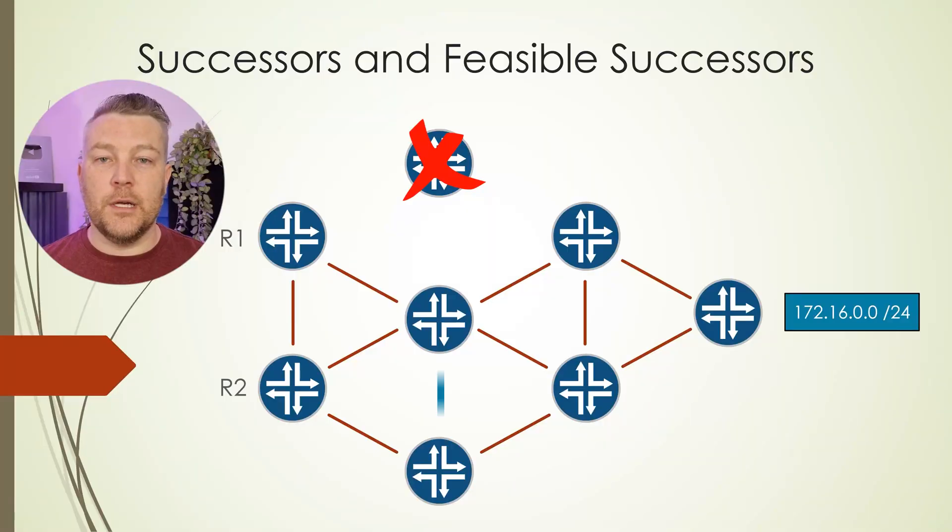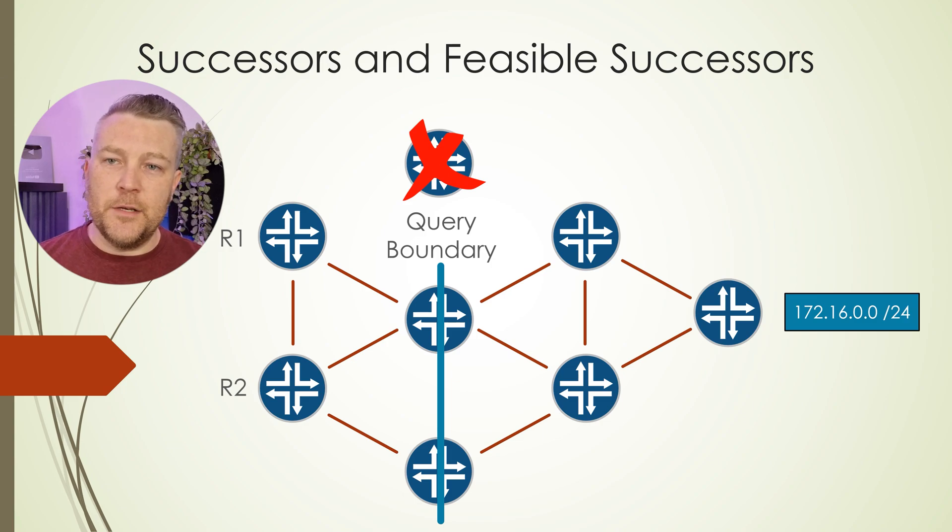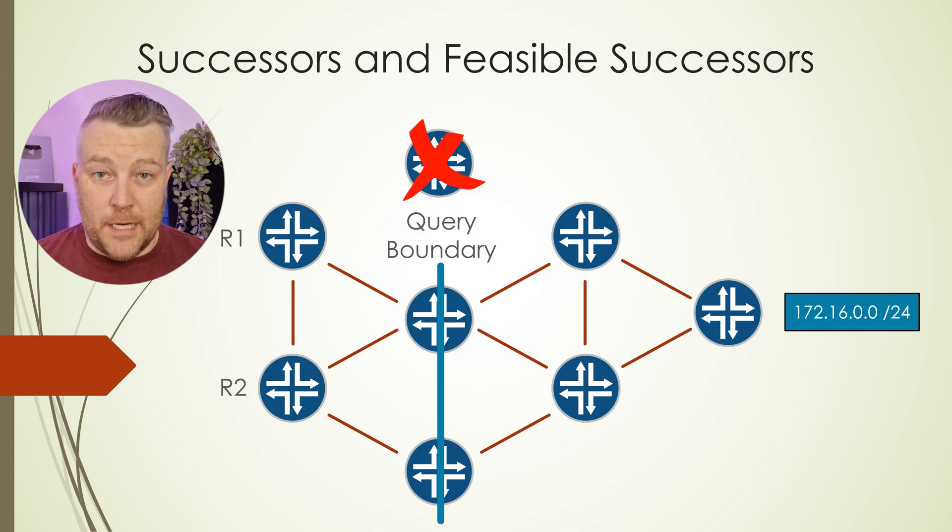These query messages will propagate through the network until they reach a query boundary — something that will stop the query. This can be one of several cases: a router that is able to provide useful information about the network, either explicitly saying yes it knows about it, or explicitly saying no it has no information and doesn't know anyone else who will either. Another case where we find a query boundary is when there is summarization in place — queries will not pass that point.